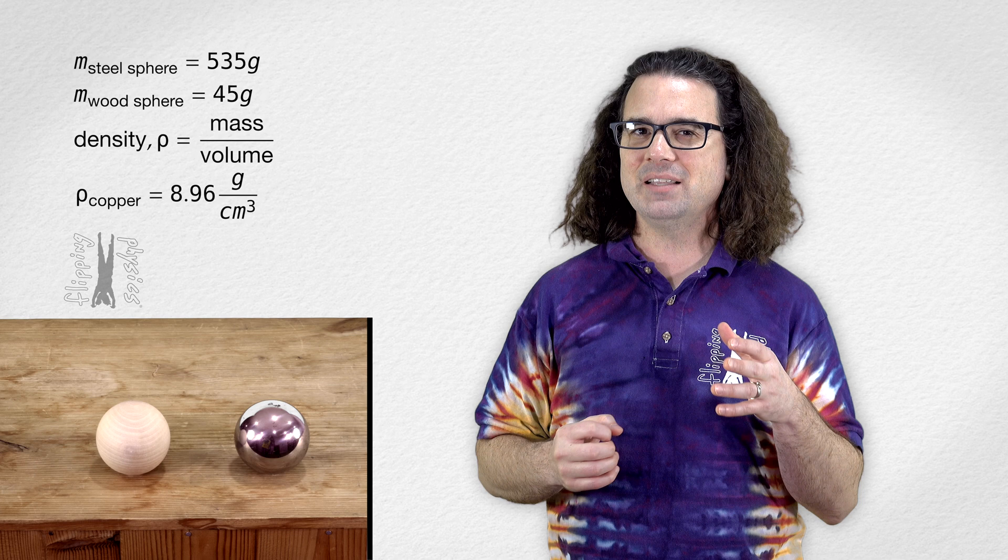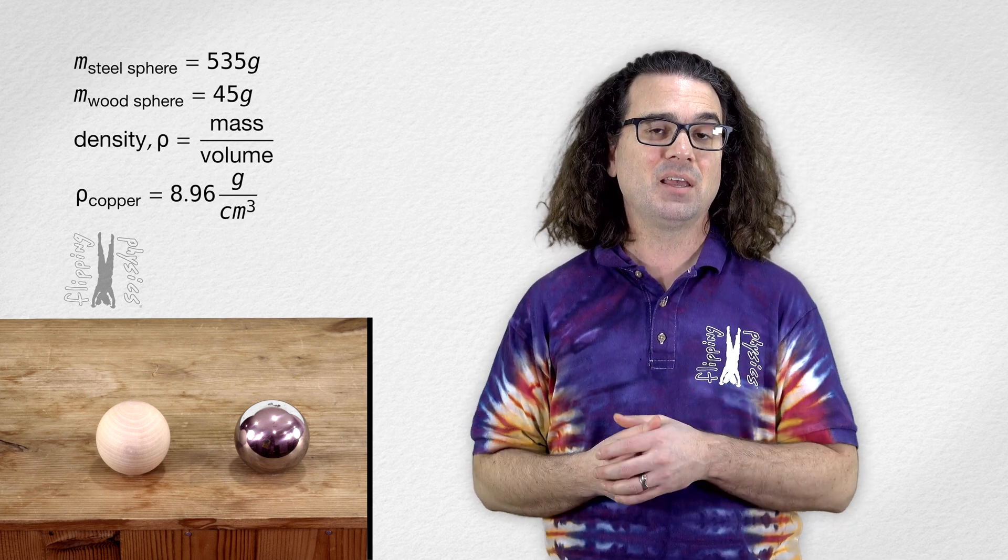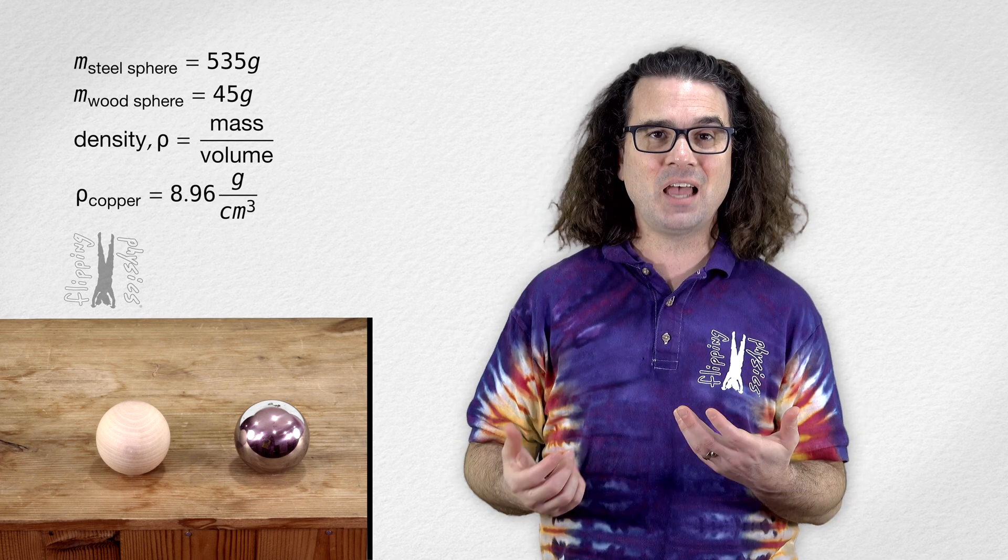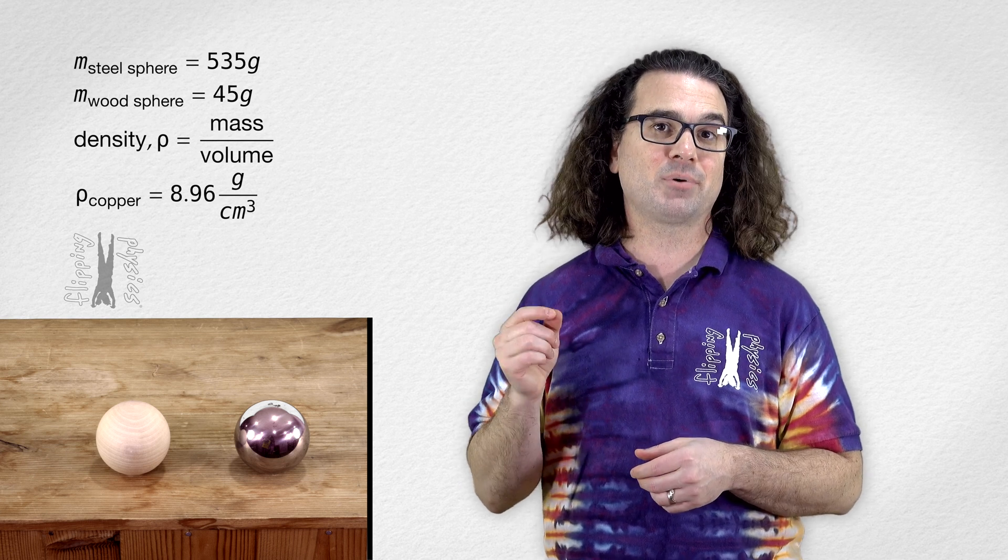And density is a material property of any pure substance. In other words, the density of pure copper is 8.96 grams per centimeter cubed, and any object made of pure copper, regardless of size, will have that same density of 8.96 grams per centimeter cubed.